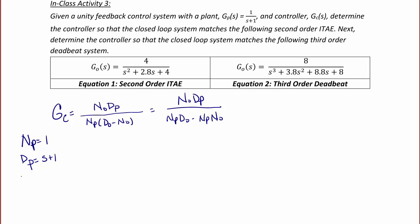The numerator of the desired closed-loop transfer function is 4. And the denominator of the desired closed-loop transfer function is s² plus 2.8s plus 4. So using the equation that we just derived, Gc(s) is equal to N0·Dp, which is 4 times (s plus 1),